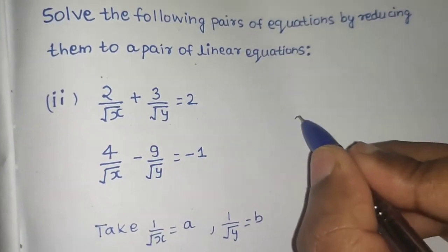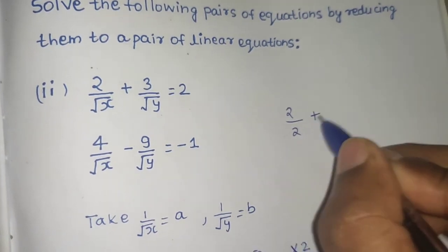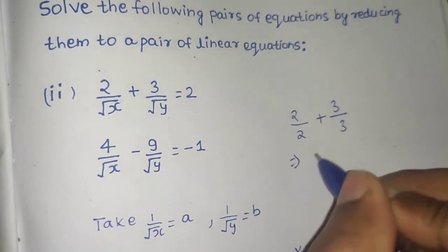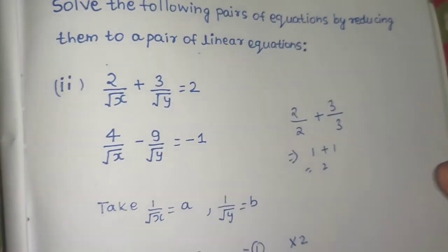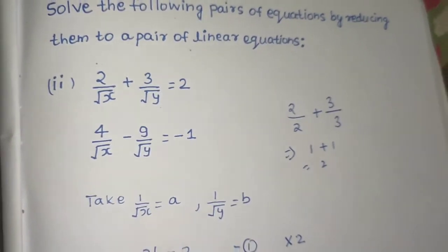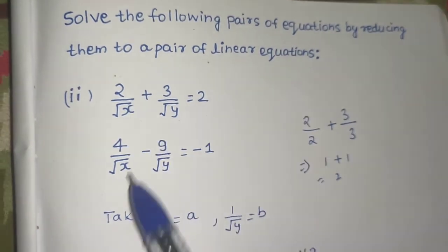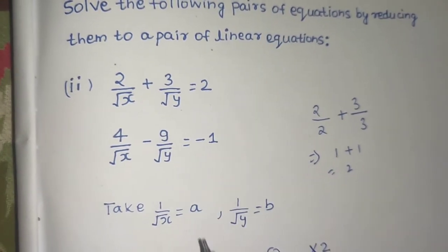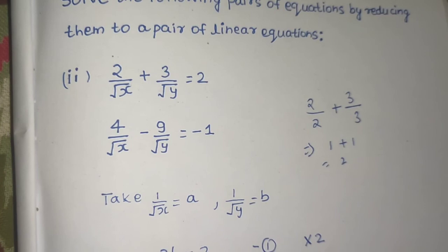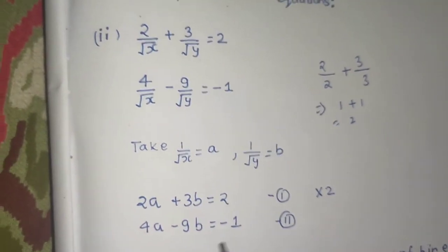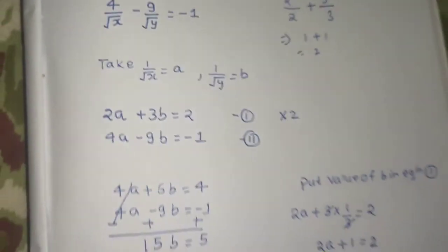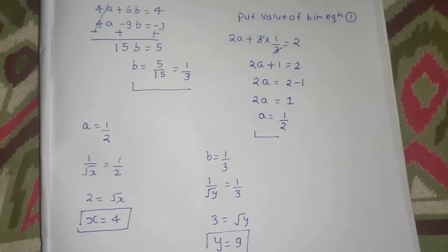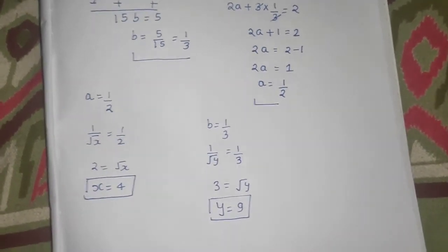You can verify: with x = 4, 2/√4 = 1, and with y = 9, 3/√9 = 1, so 1 + 1 = 2, which matches the right-hand side. The key method is to identify the common portion — 1/√x and 1/√y — and use substitution to transform the equation into a linear one. Elimination is most preferable, but substitution also works. Thanks.